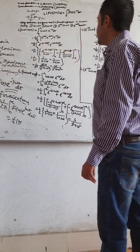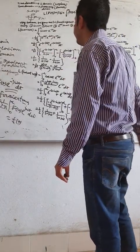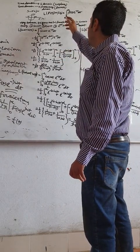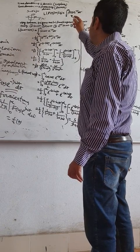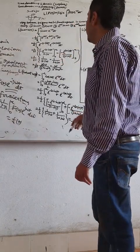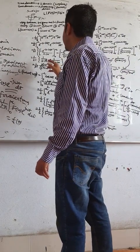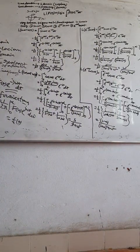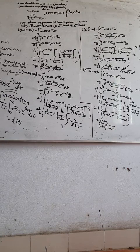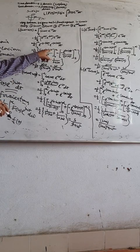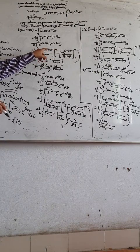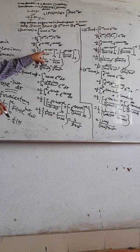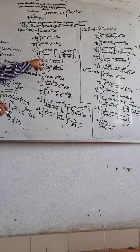We now have two functions for Laplace transformation with limit 0 to infinity. After evaluating the integration using the basic Laplace formula — integral from 0 to infinity of f(t) e to the power minus st dt — it gives 1 by (s minus j omega) and 1 by (s plus j omega), because e to the power minus infinity is 0 and e to the power 0 equals 1.